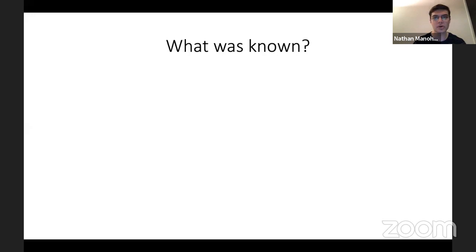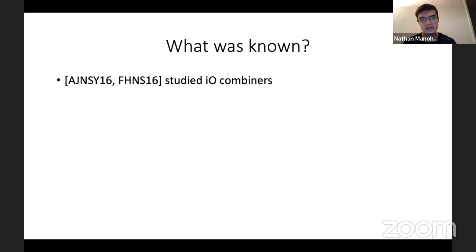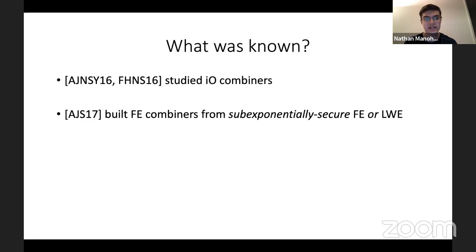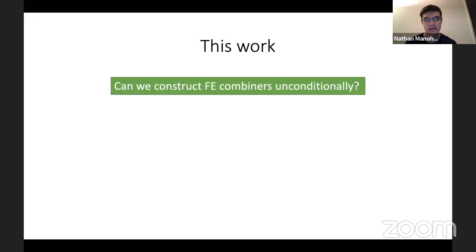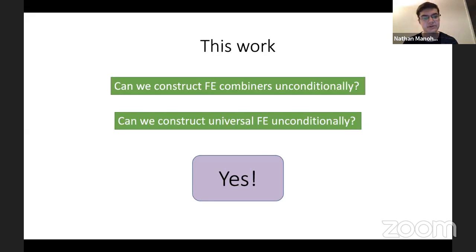Prior to our work, there were studies of IO combiners, and then FE combiners were built assuming either sub-exponentially secure FE or LWE, followed by work building FE combiners assuming a pseudorandom generator in NC1. There has been a series of works building FE combiners from progressively weaker assumptions; however the question of whether we can build an FE combiner without any assumptions remained open. We answer this affirmatively in this work, and we also obtain a universal functional encryption construction unconditionally.